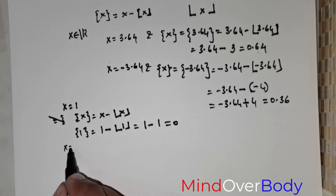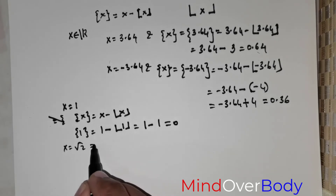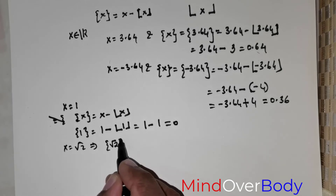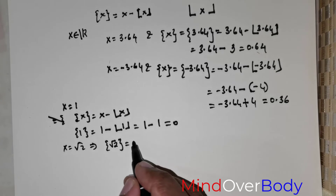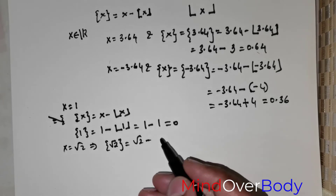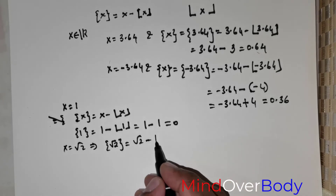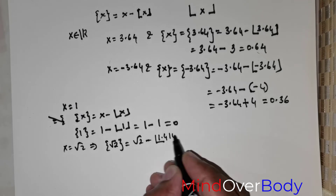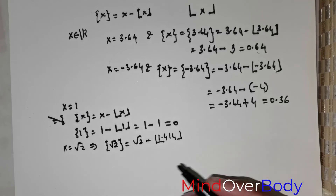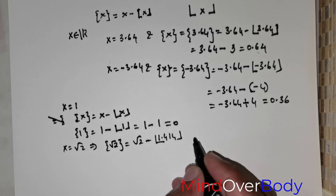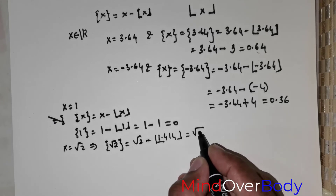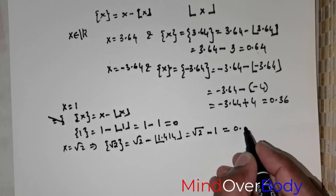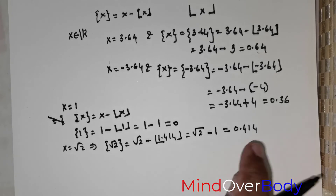Now let us take x equal to root 2. The fractional part of root 2 equals root 2 minus the floor of root 2. Root 2 is approximately 1.414, so the floor is 1. Therefore the fractional part of root 2 equals root 2 minus 1, which is approximately 0.414.